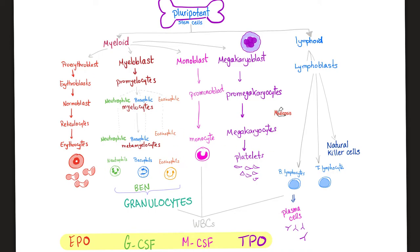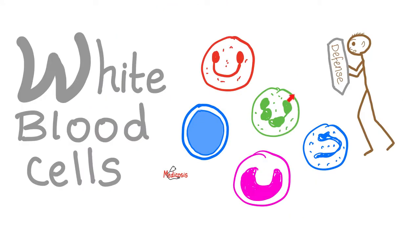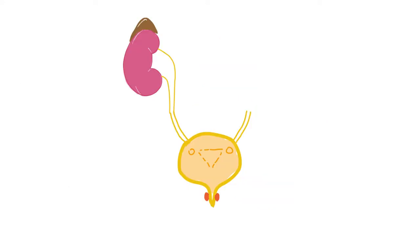Which one of these are the pus cells? Neutrophils. Which one of these mainly target bacteria? Neutrophils. Here are the neutrophils, eosinophils, basophils, monocytes, lymphocytes. Neutrophils are also known as polymorphonuclear cells or pus cells.